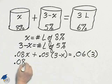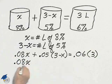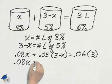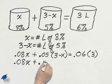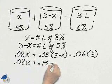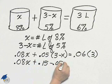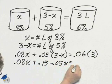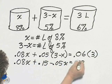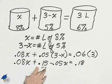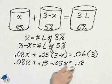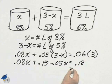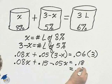Solving this equation, 0.08X plus 0.15 minus 0.05X equals 0.18. If I subtract 15 hundredths from 18 hundredths, I get 3 hundredths.